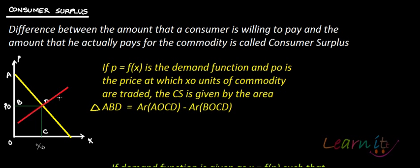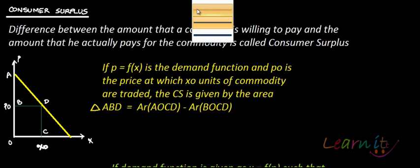Now you have to think about how much the consumer is willing to pay and how much he is actually paying — that is, how much utility or value the consumer is going to get from consuming these goods. P naught is the equilibrium price and X naught is the equilibrium quantity.